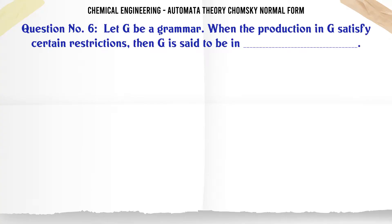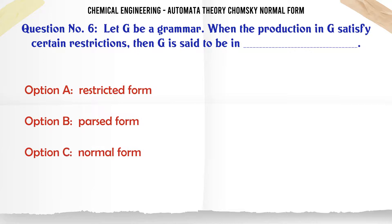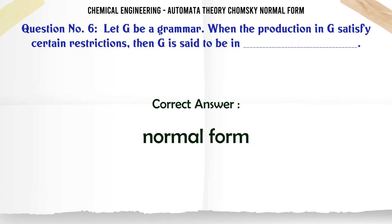Let G be a grammar. When the productions in G satisfy certain restrictions, then G is said to be in: A. Restricted form. B. Parsed form. C. Normal form. D. All of the mentioned. The correct answer is: Normal form.